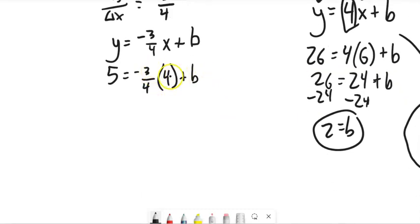And negative 3 fourths times 4, well, 4 divided by 4 is 1. So this is negative 3 plus b equals 5. So now I can keep solving for b, add 3 to both sides. b equals 8.